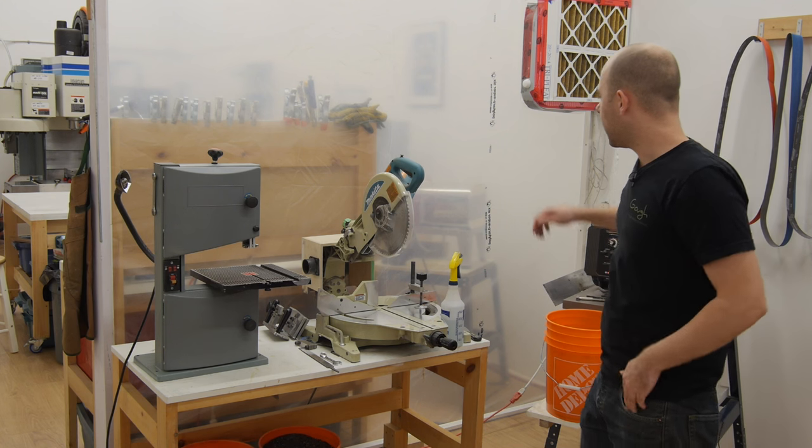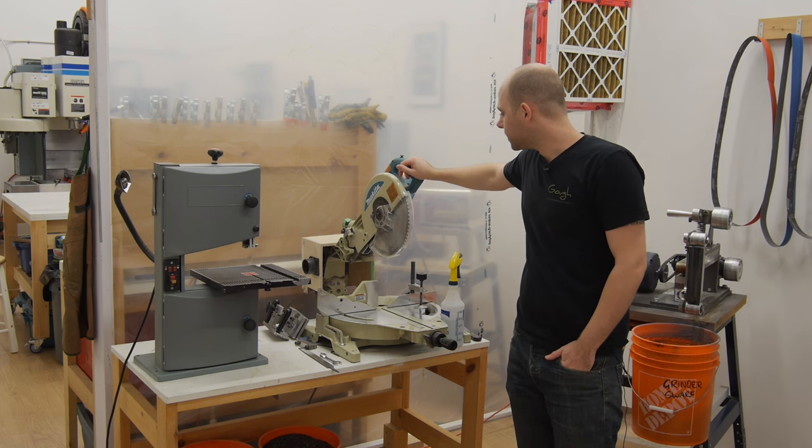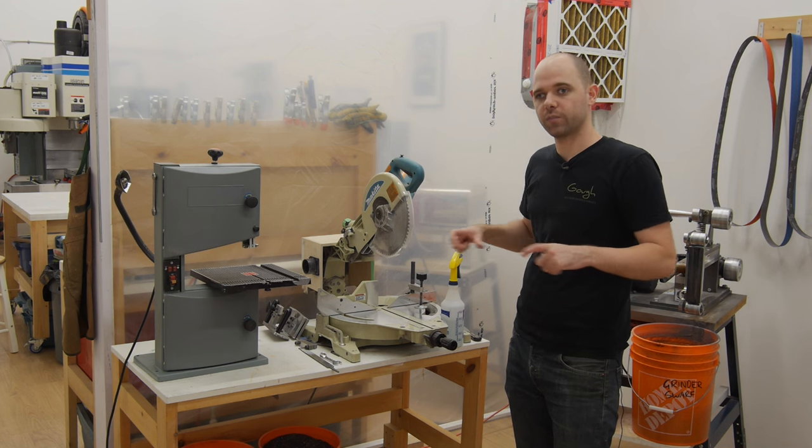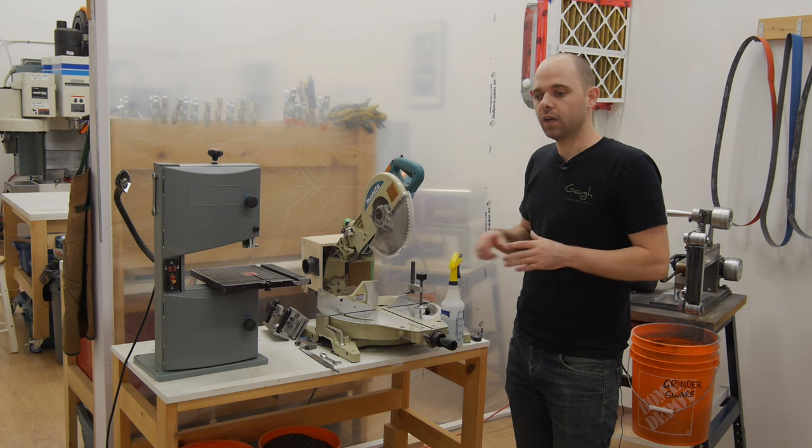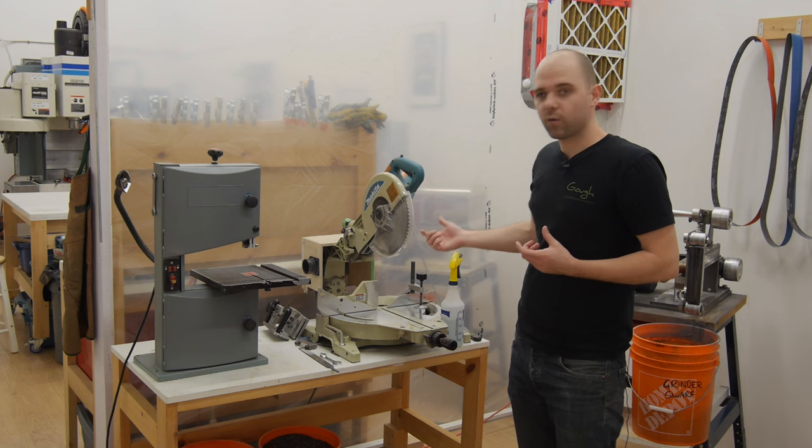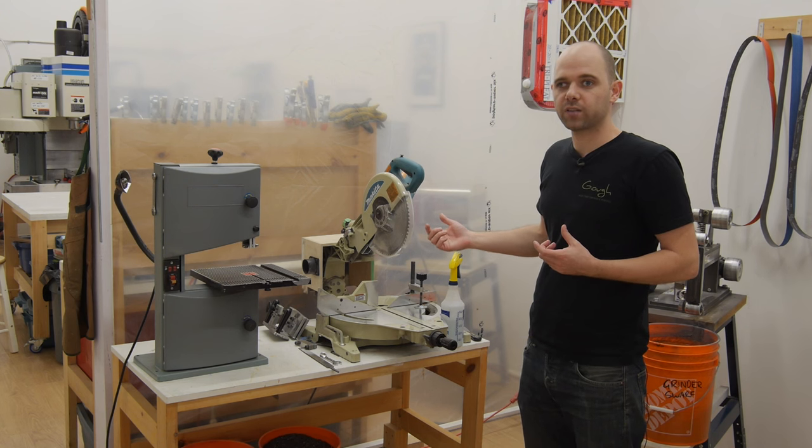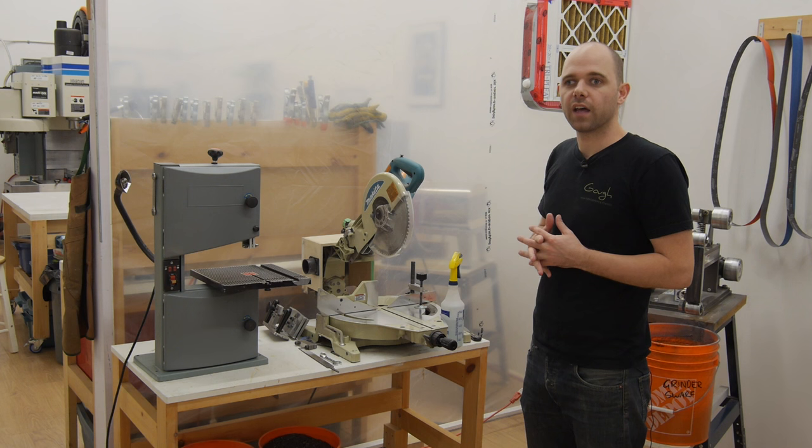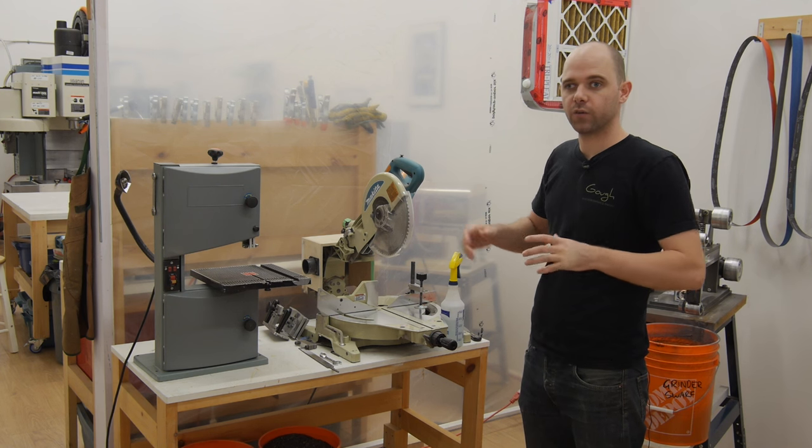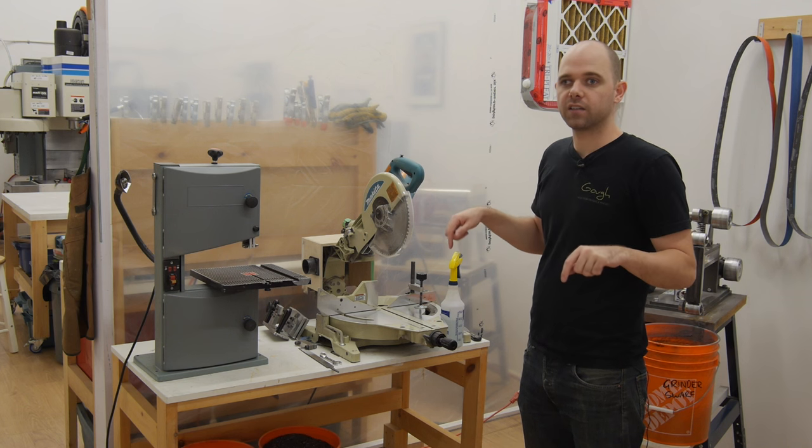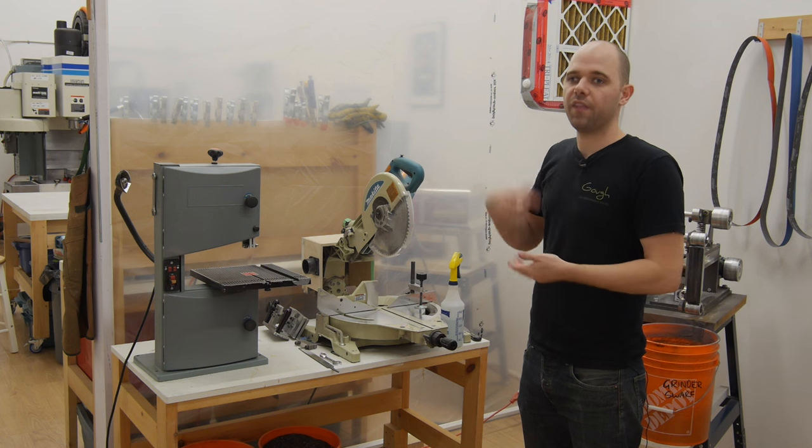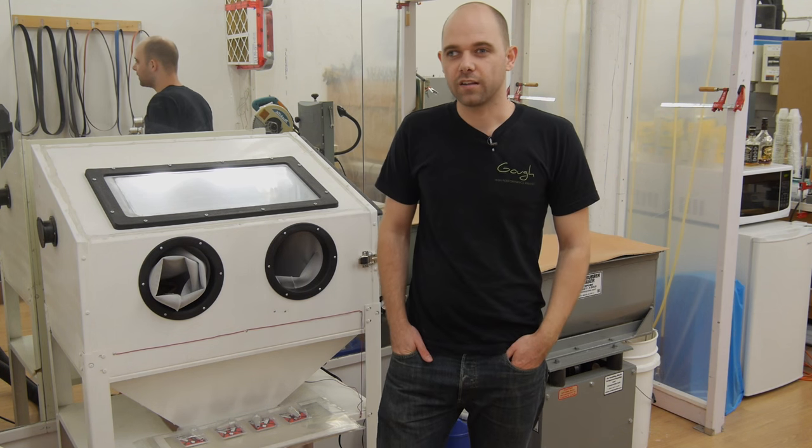The mitre saw I bought specifically for cutting sheets of G10 into strips so that I can machine them on the machining center. The only problem is that the G10 is really abrasive, so even with really good quality carbide blades on the mitre saw you'll get less than a hundred cuts out of a blade before it's toast. What I'm planning to do to fix that is to machine the scales from an entire sheet of G10 rather than cutting it into strips and then machining.